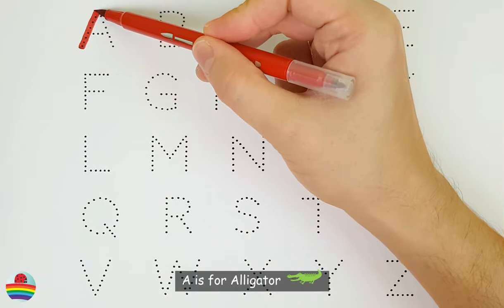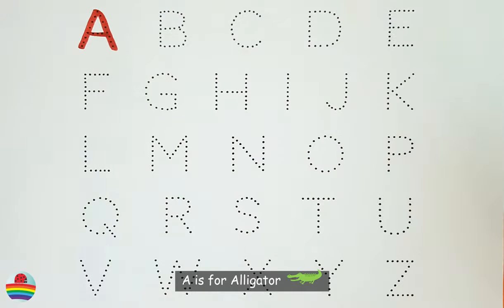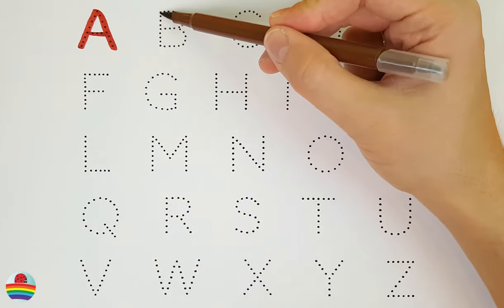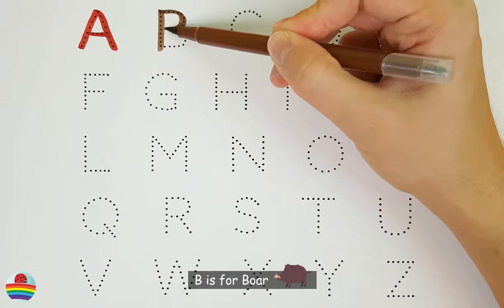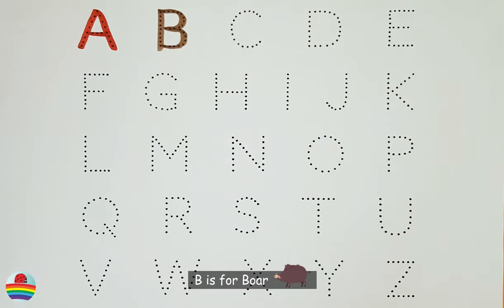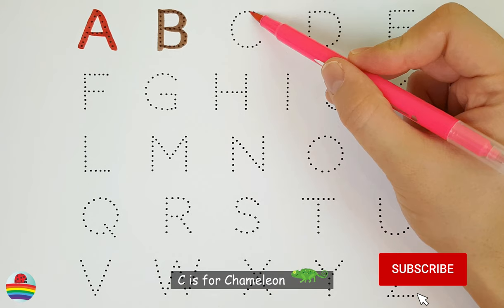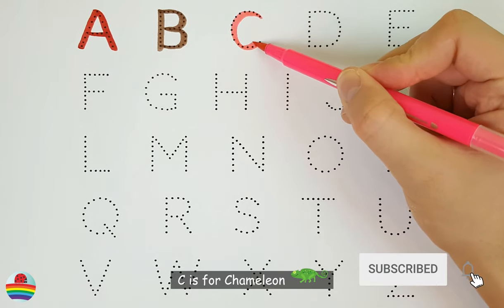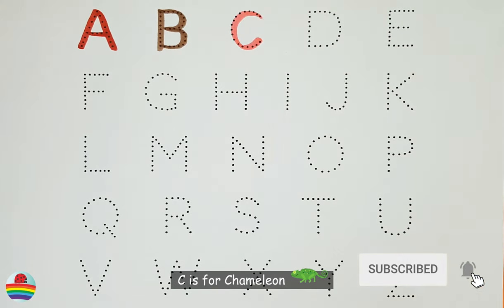A. A is for alligator. A. B. B is for boar. B. C. C is for chameleon. C.